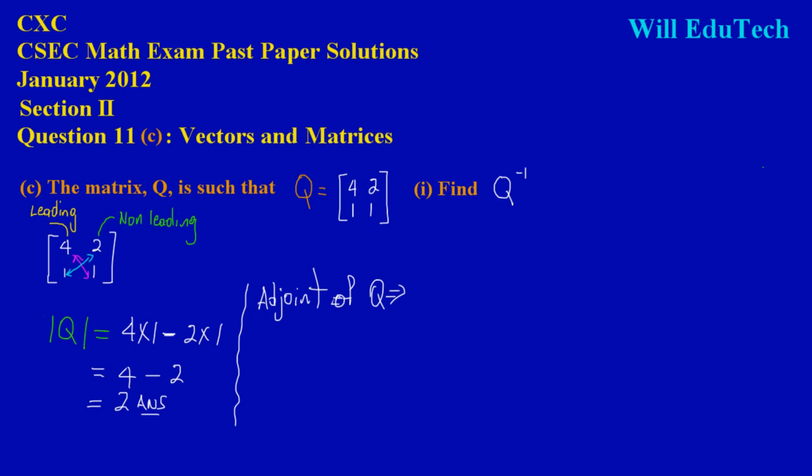The adjoint of Q would really be—when finding the adjoint of a matrix, this is pretty easy. All you're doing is you're flipping around the leading diagonals, so the 4 and the 1 basically switch places. So instead of having the 4 here, I've placed the 1 there, and the 4 will go in the position of the 1. And I'm simply just going to change the sign on the non-leading diagonals. So instead of having a positive 2, I'll have a negative 2, and instead of having a positive 1, I'll have a negative 1.